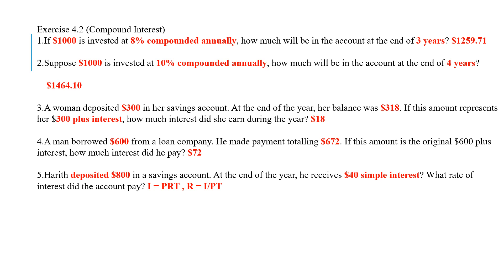Moving on to Exercise 4.2. The first few questions are simple interest. If $1,000 is invested at 8% compounded annually, just plug it into the formula. For question three: if the amount is $318 representing $300 plus interest, how much interest? Just subtract: 318 minus 300 is $18. Similarly, question four: just subtract to find $72. For question five, Harit deposited $800 and received $40 simple interest — find the rate. Use R equals I over PT: 40 divided by 800 times 1 equals 5%. Don't forget to multiply by 100%.